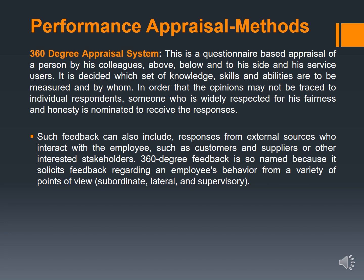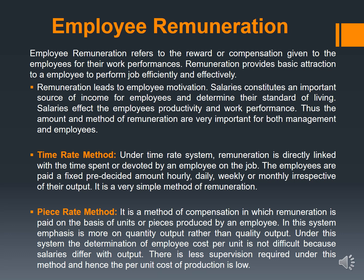The last topic in the staffing unit is remuneration. It refers to the reward given to employees for their work performance. Fair remuneration leads to employee motivation and affects their productivity and work performance. There are two methods: in the time rate system, remuneration is linked with the time spent by the employee on the job, with employees paid a pre-decided amount irrespective of output. In the piece rate method, employees are paid on the basis of their output, emphasizing quantity rather than quality. With this, we have completed the staffing unit.